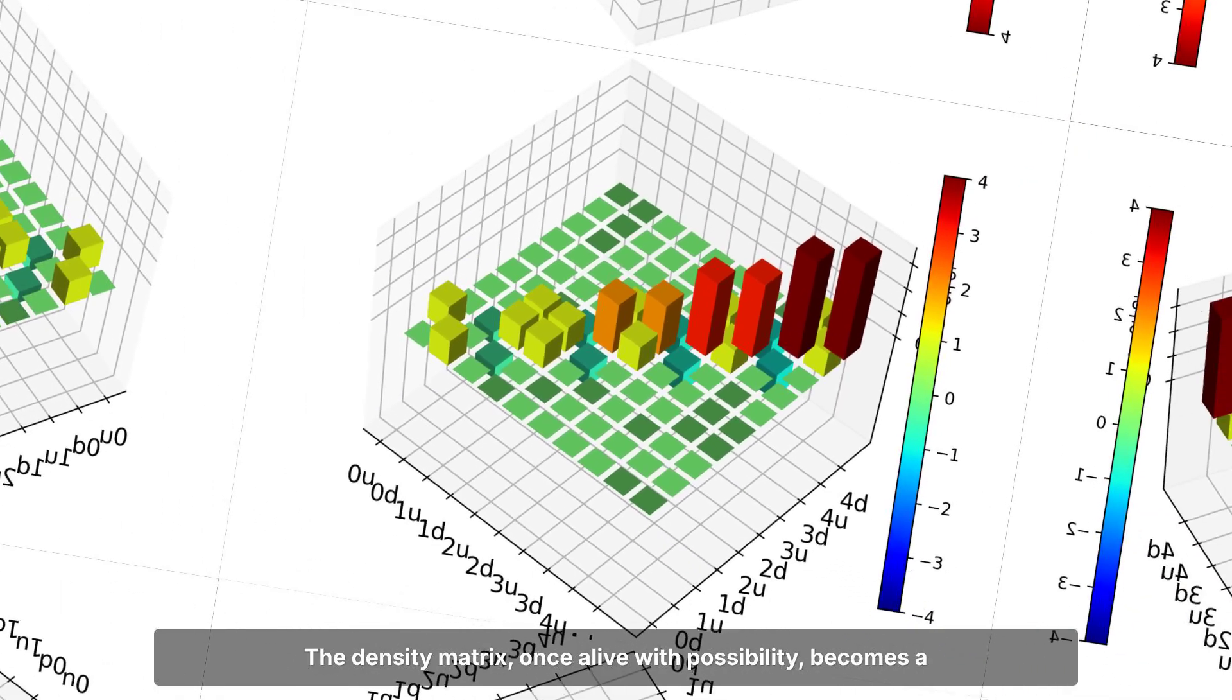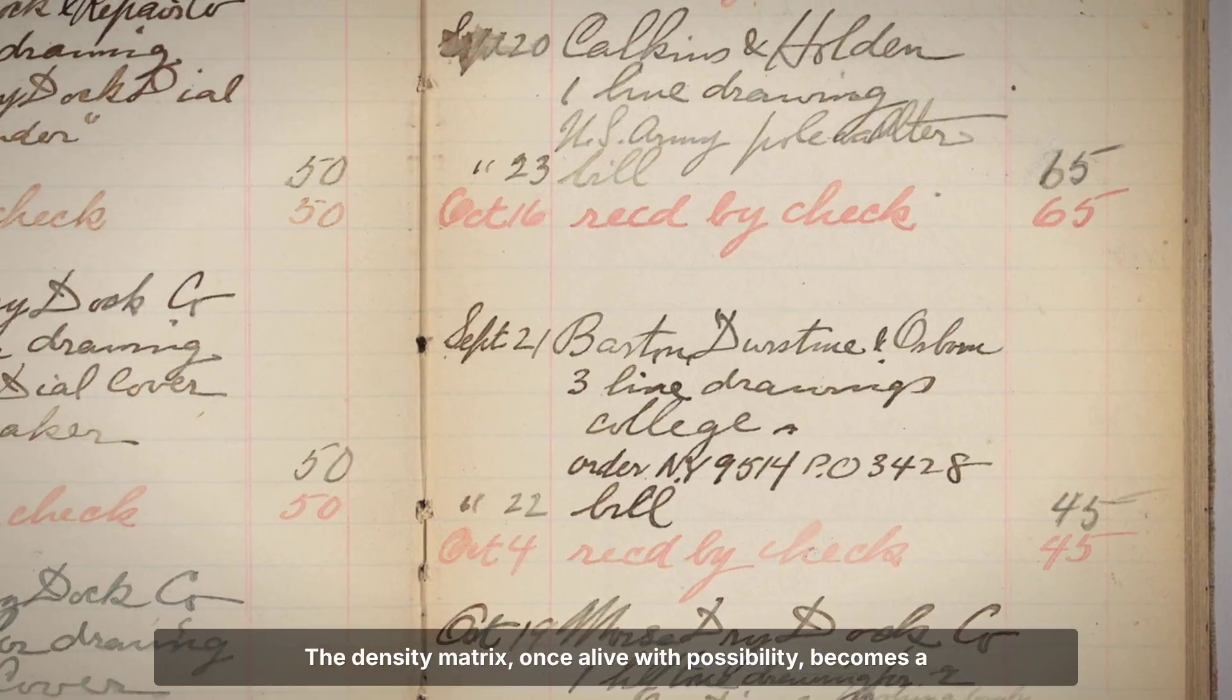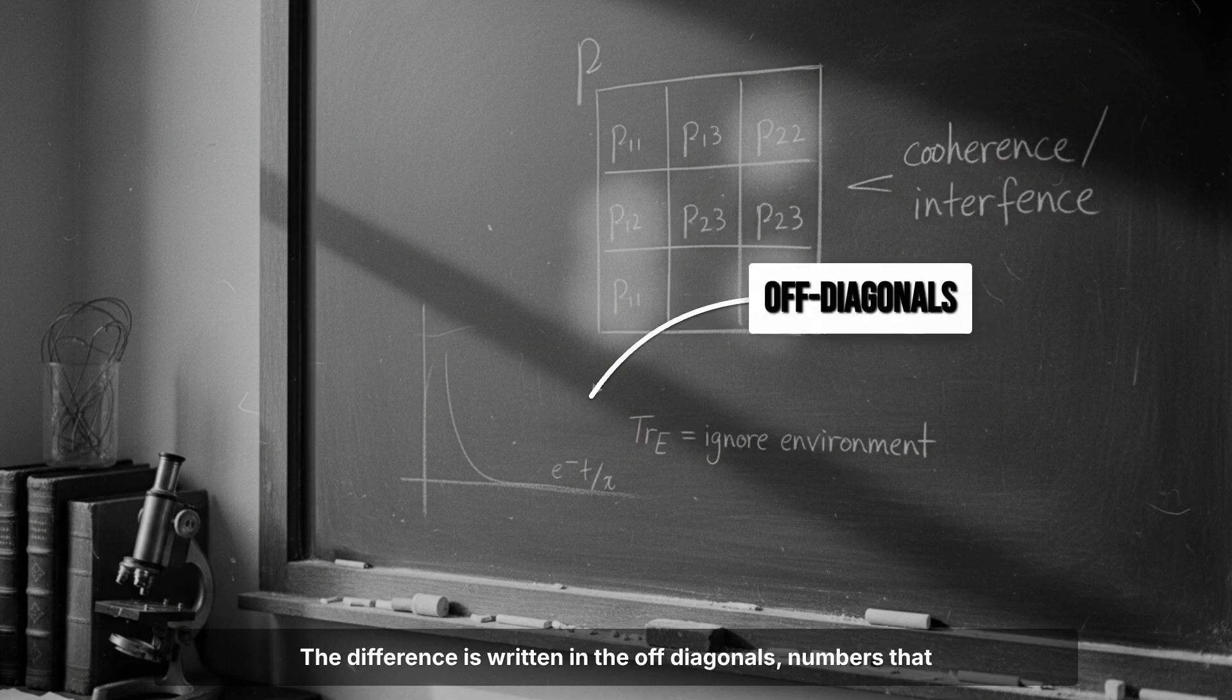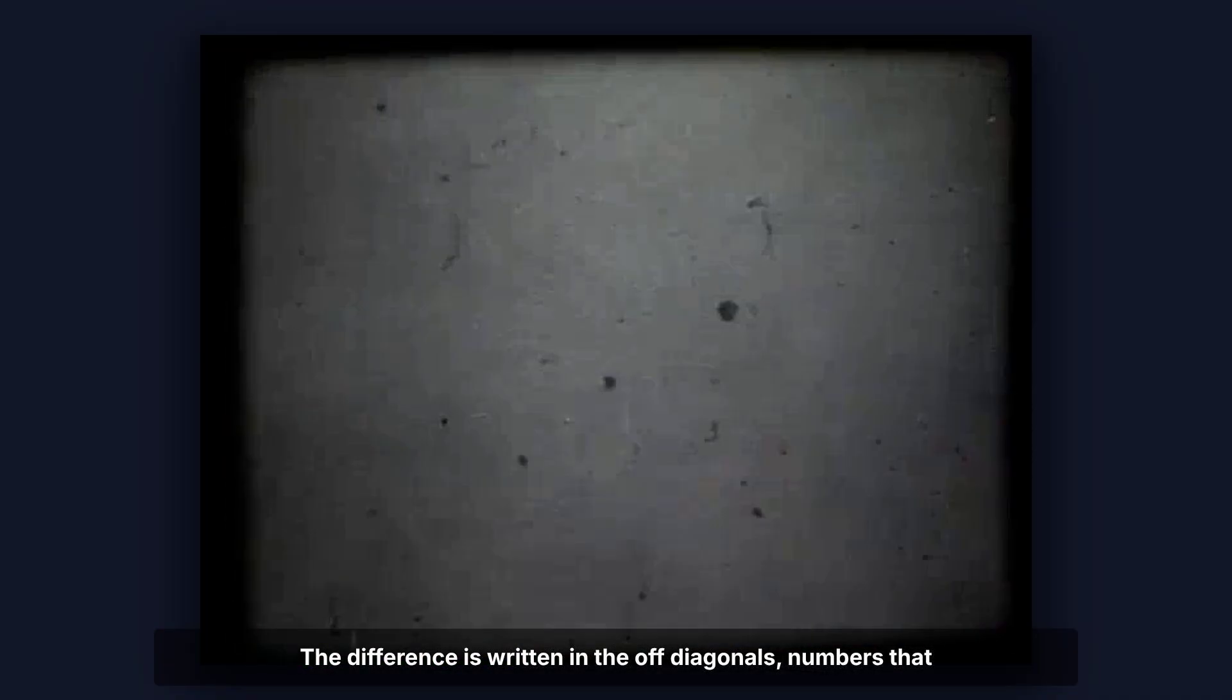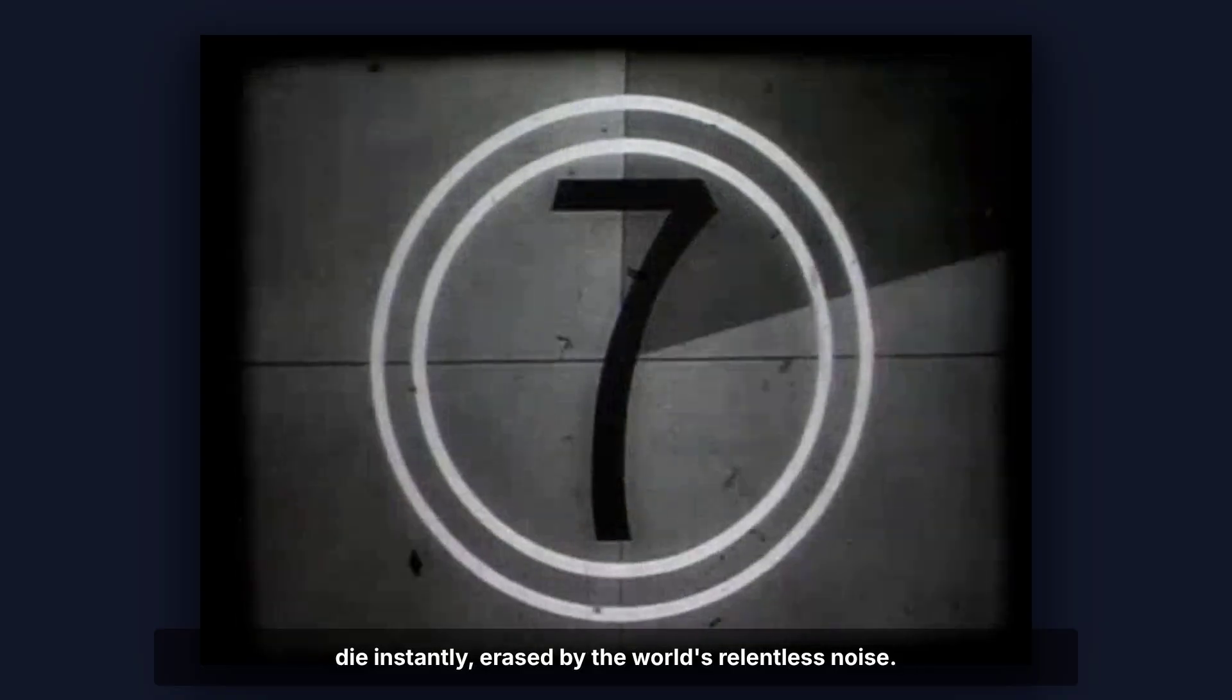The density matrix, once alive with possibility, becomes a ledger of facts. The difference is written in the off-diagonals. Numbers that die instantly, erased by the world's relentless noise.